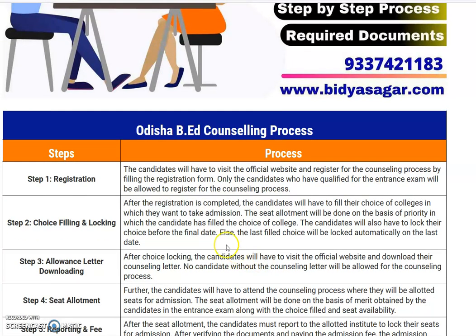The second step is that after the registration is completed, the candidates will have to fill their choice of colleges in which they want to take admission. Accordingly, the seat allotment will be done on the basis of the priority with which the candidate has filled the choice of colleges.